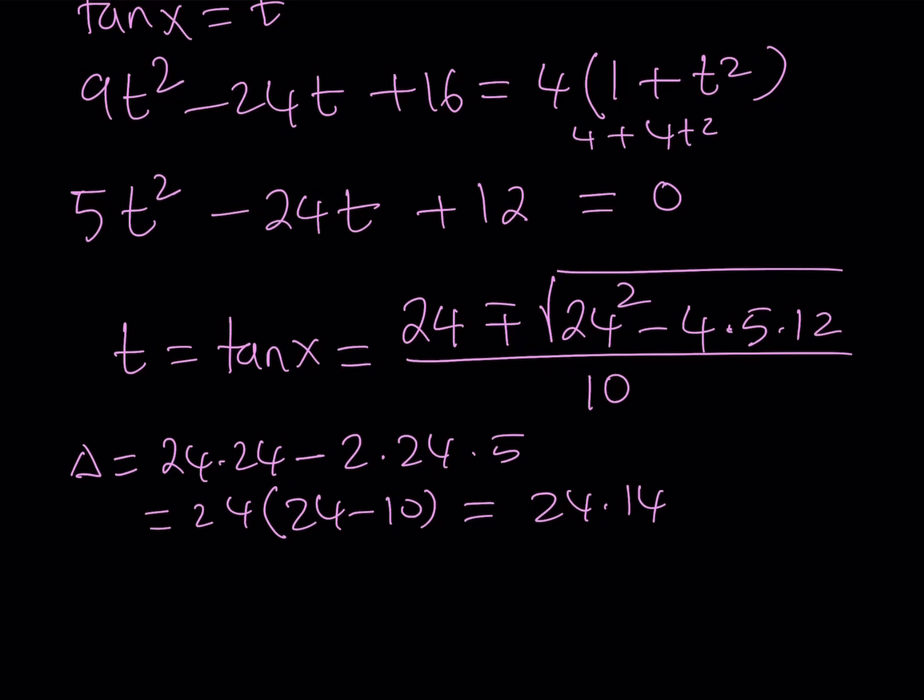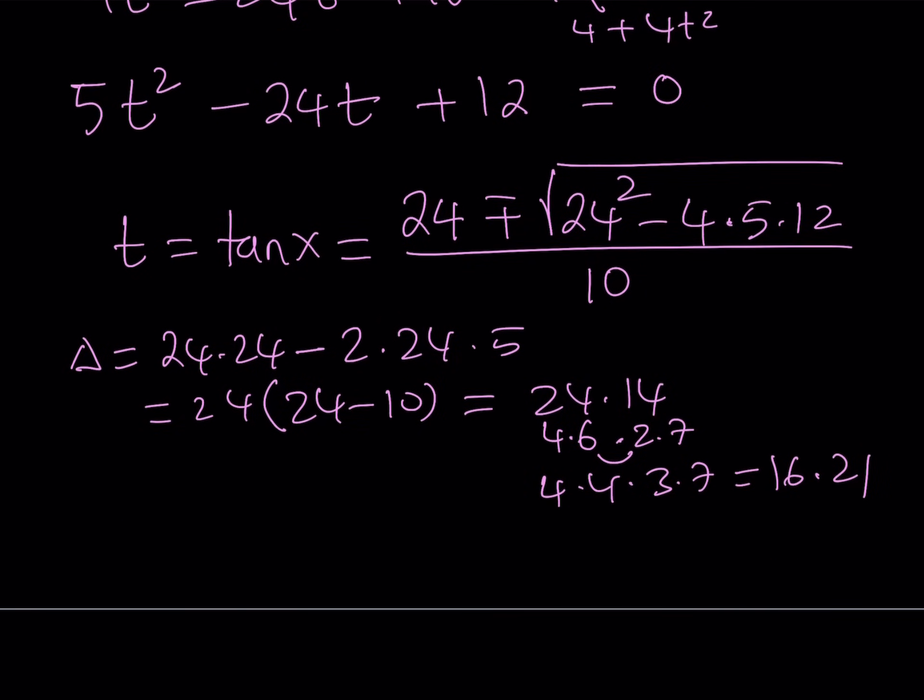So let me go ahead and simplify. And that's going to be divided by 2 times a, which is 10. Let's go ahead and simplify the discriminant first. So our delta, or discriminant, is going to be 24 squared minus 4 times 5 times 12. So here's what I can do. I can write the 24 as 24 times 24. And then minus, I got like a 4 times 12, which is 48. So I can write that as 2 times 24. And then I have an extra 5. Great. Now I can factor out a 24 here. And let's see what happens. This is going to give me 24 times 24 minus 10, and that is equal to 24 times 14.